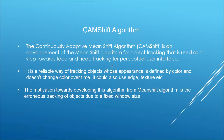The CamShift algorithm — the Continuously Adaptive Mean Shift algorithm — is an advancement of the Mean Shift algorithm for object tracking, used as a step towards face and head tracking for perceptual user interfaces. It is a reliable way of tracking objects whose appearance is defined by color, where the color doesn't change over time. It could also use edge detection or texture detection.